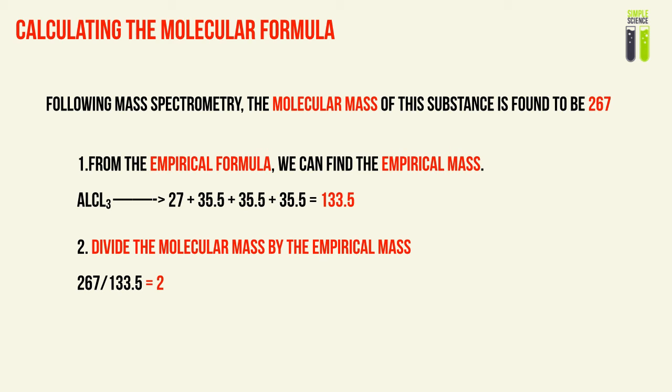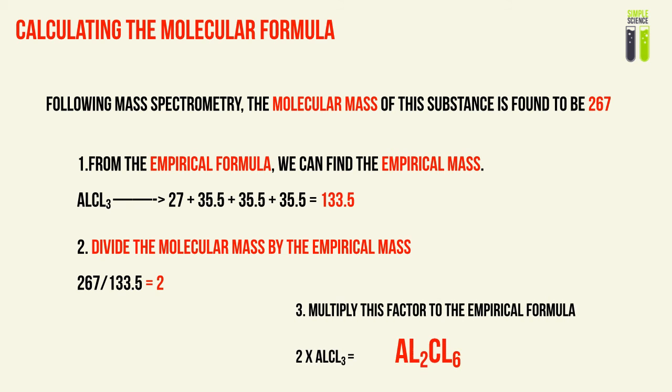This whole step to find the molecular formula is basically a comparison between the empirical mass and the molecular mass. So first of all, we need to find the empirical mass. That will give us 27 plus 3 times 35.5 — that gives us 133.5. That will be our empirical mass. So the important step is to divide the molecular mass by the empirical mass — that gives us a multiplier of 2. So 2 empirical masses will result in 1 molecular mass.